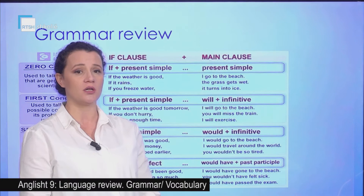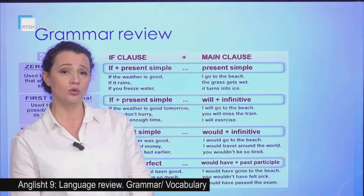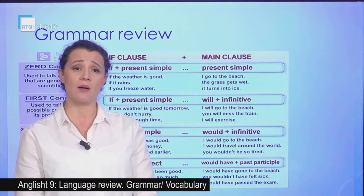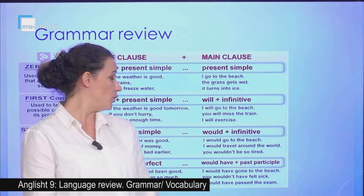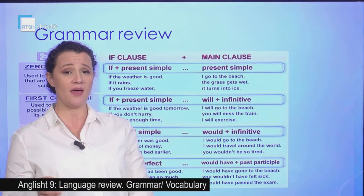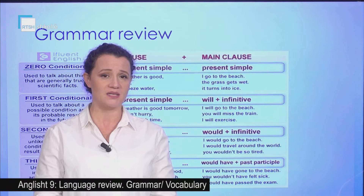Then we have the second conditional: the if clause uses the past simple, plus would or could, plus a verb in the infinitive. Then we have the third conditional, which expresses something impossible to happen. It is formed by: if plus the past perfect for the if clause, and would or could, plus have, plus the past participle.